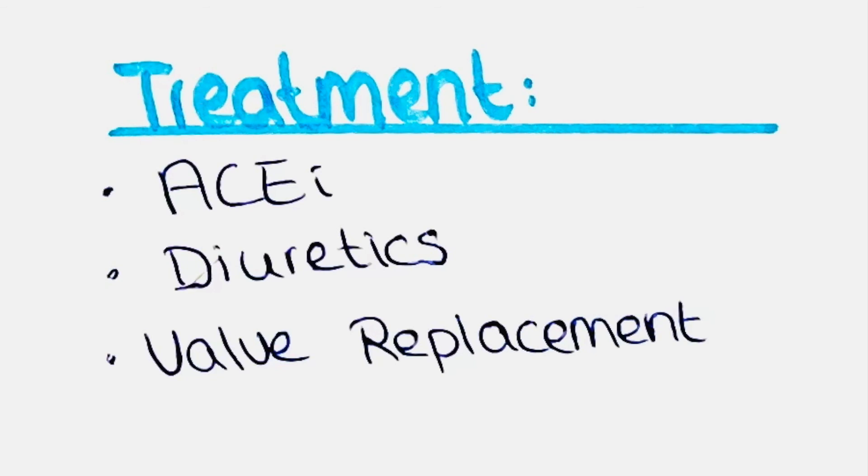How can we treat aortic regurgitation? Treatment options include pharmacological or surgical approaches. Peripheral arterial and venous vasodilators such as ACE inhibitors and diuretics are commonly used, although medications alone might not provide sufficient relief. In case of severe aortic regurgitation, urgent aortic valve replacement is recommended regardless of the underlying cause. This condition is associated with a poor prognosis due to the lack of left ventricular adaptation and markedly elevated left ventricular end-diastolic pressure. Unlike some conditions, slowing the heart rate can exacerbate regurgitation as it prolongs the duration of retrograde flow.